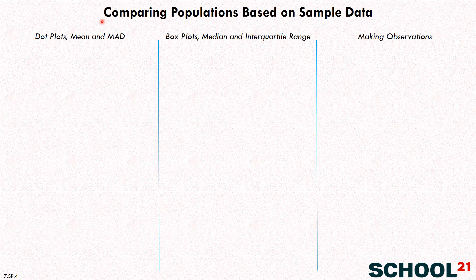All right, let's spend a little time comparing populations based on sample data. We'll look at dot plots, the mean, and the mean absolute deviation. Then we'll also look at box plots, median, and the interquartile range.